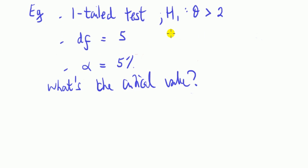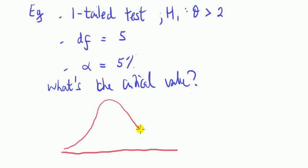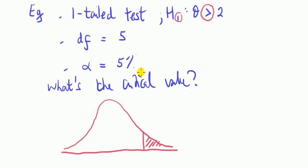First question: say we're doing a one-tailed test, the alternative hypothesis is that parameter theta is bigger than a number. The degree of freedom is 5, and alpha is 5%. Which tail are we looking at? Because H1 has 'greater than', we look at the right tail. A useful memory trick: less than → L for left; greater than → R for right. So here, greater than means right tail, and we're after a positive C.